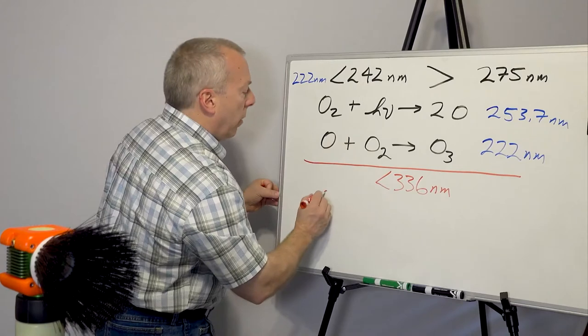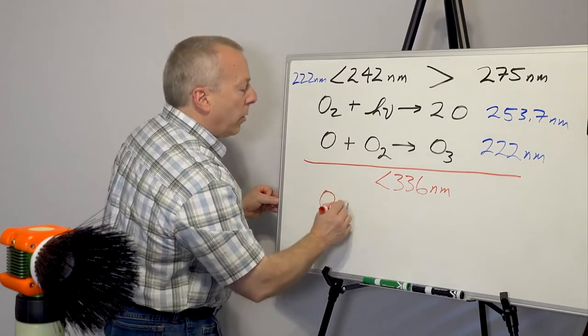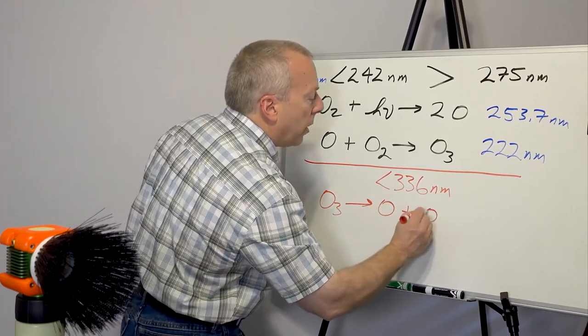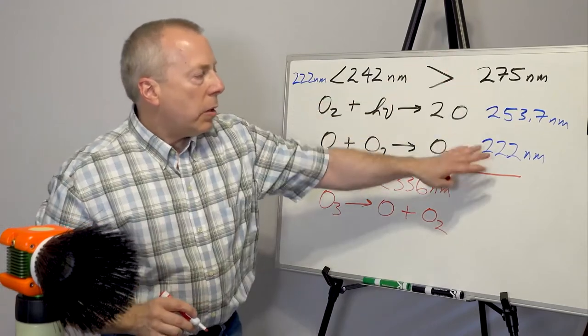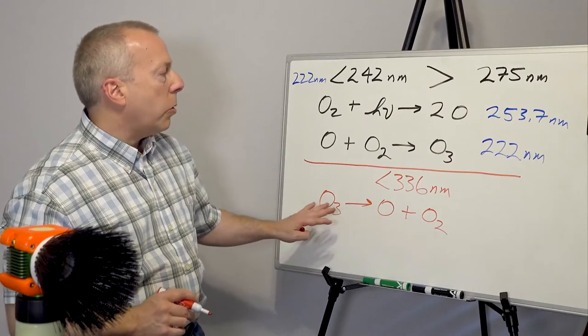what occurs is that the ozone undergoes photolysis and goes back to an oxygen atom plus the oxygen molecule. So all of these germicidal light systems would generate oxygen from ozone.